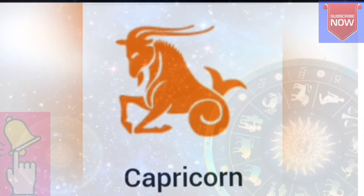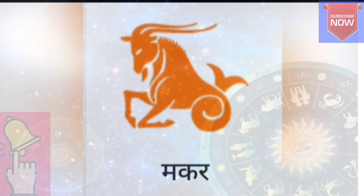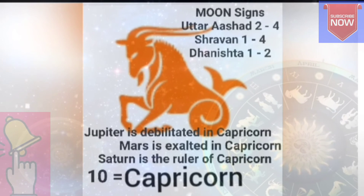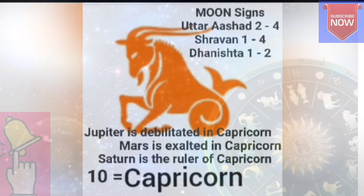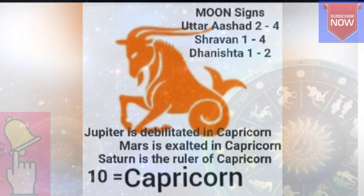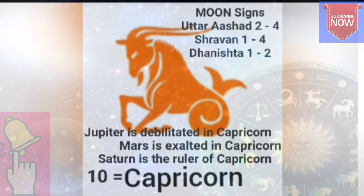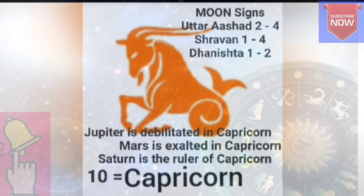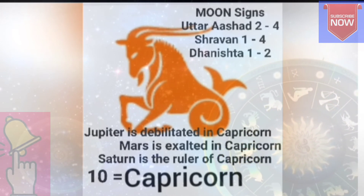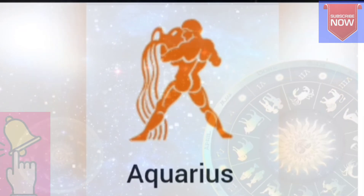Capricorn, number 10, is called Makar Rashi in Hindi. This Rashi is ruled by Saturn. Mars is exalted in Capricorn and Jupiter is debilitated in Capricorn. The nakshatras are: Uttarashadha 2, 3, and 4 Pada, Shravana 1, 2, 3, and 4 Pada, and Dhanishtha 1 and 2 Pada.